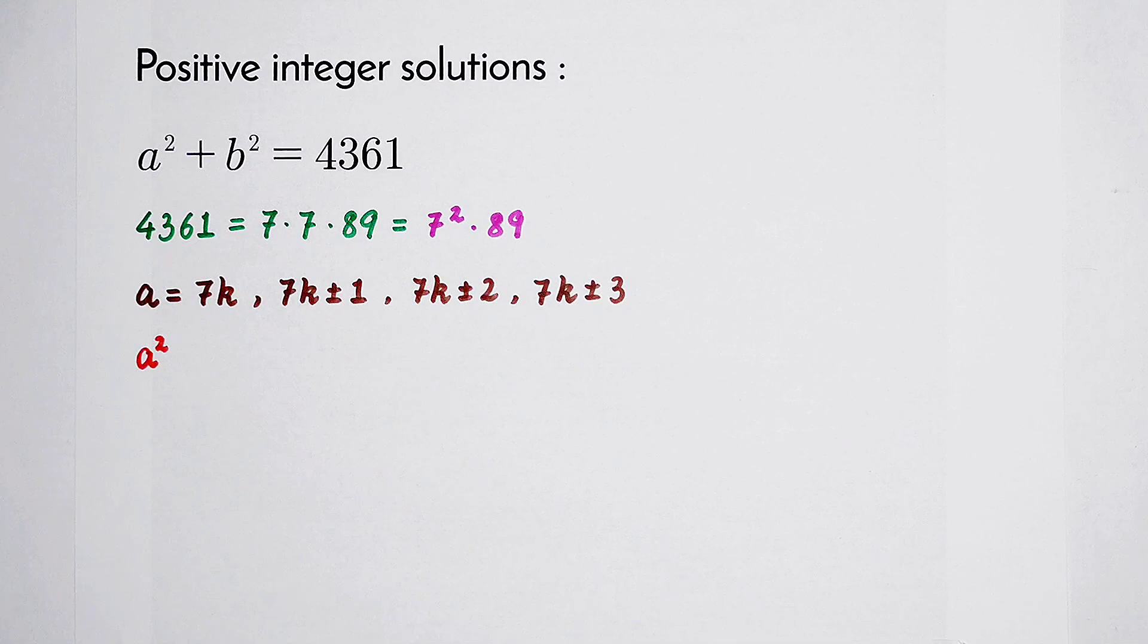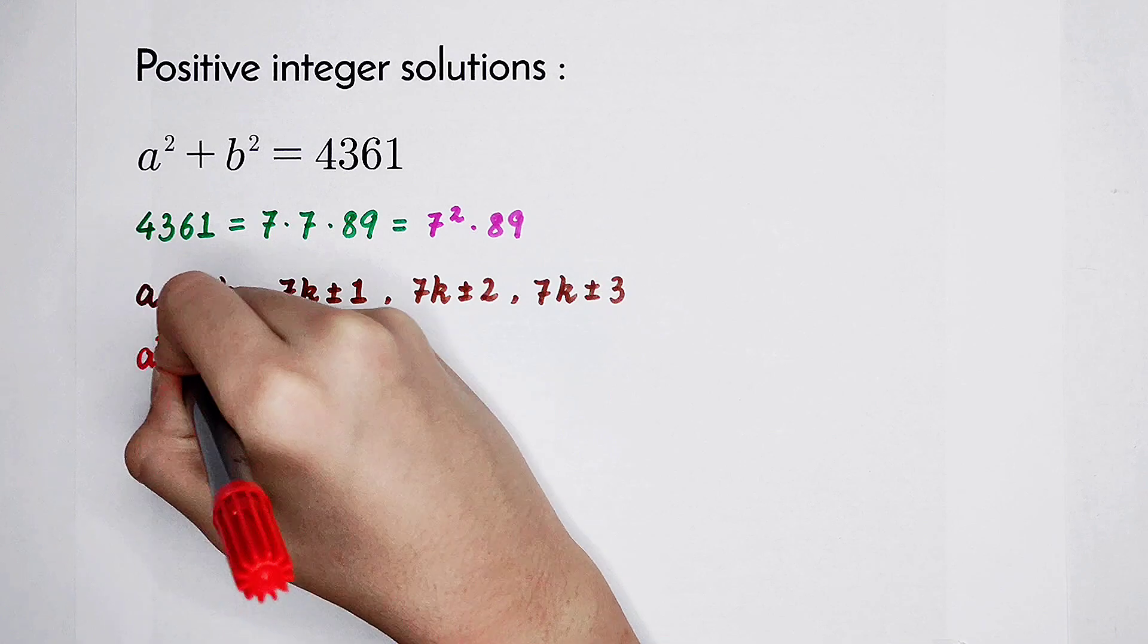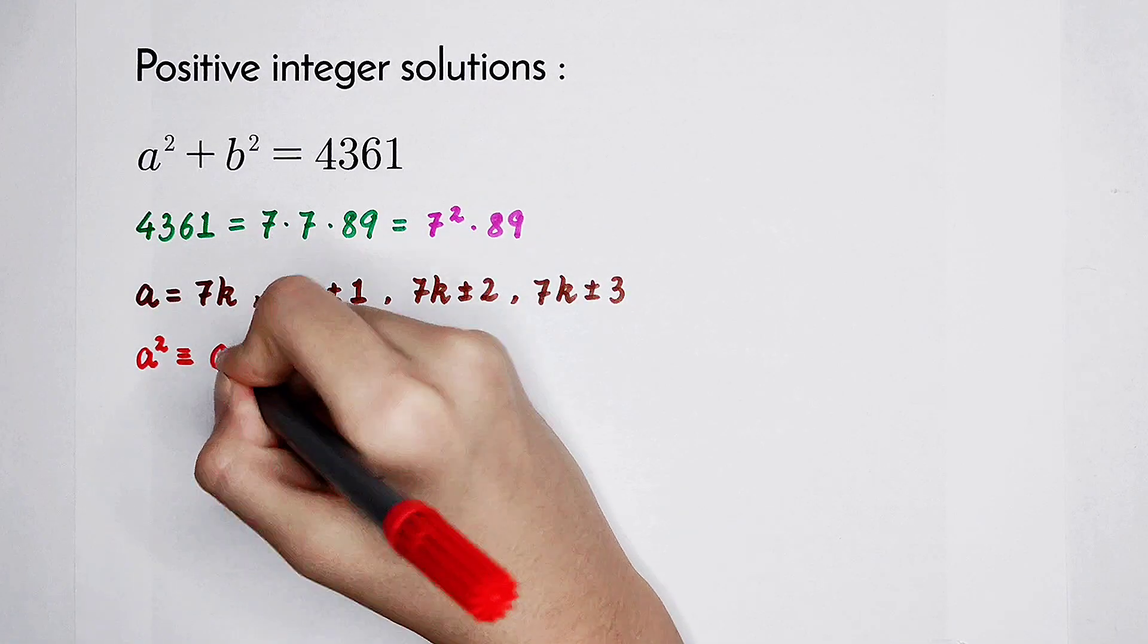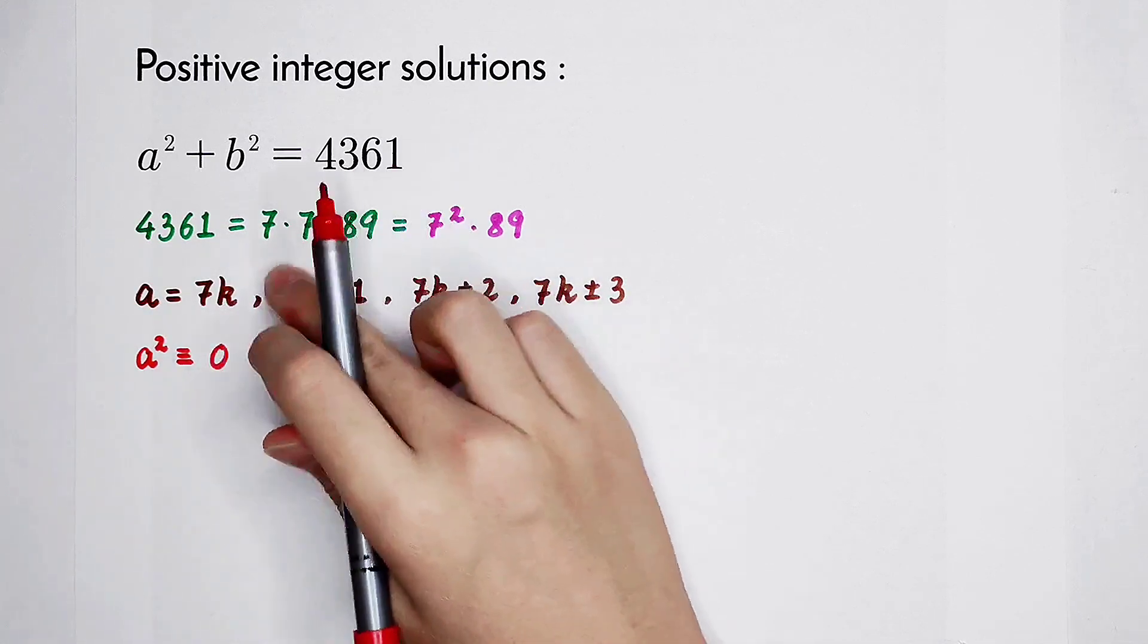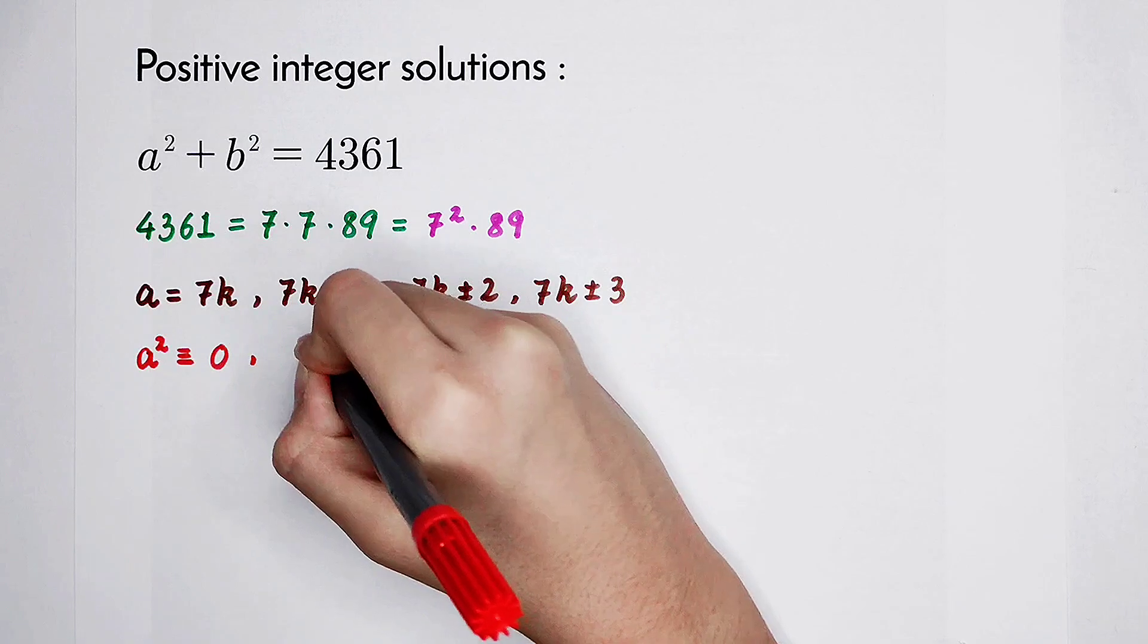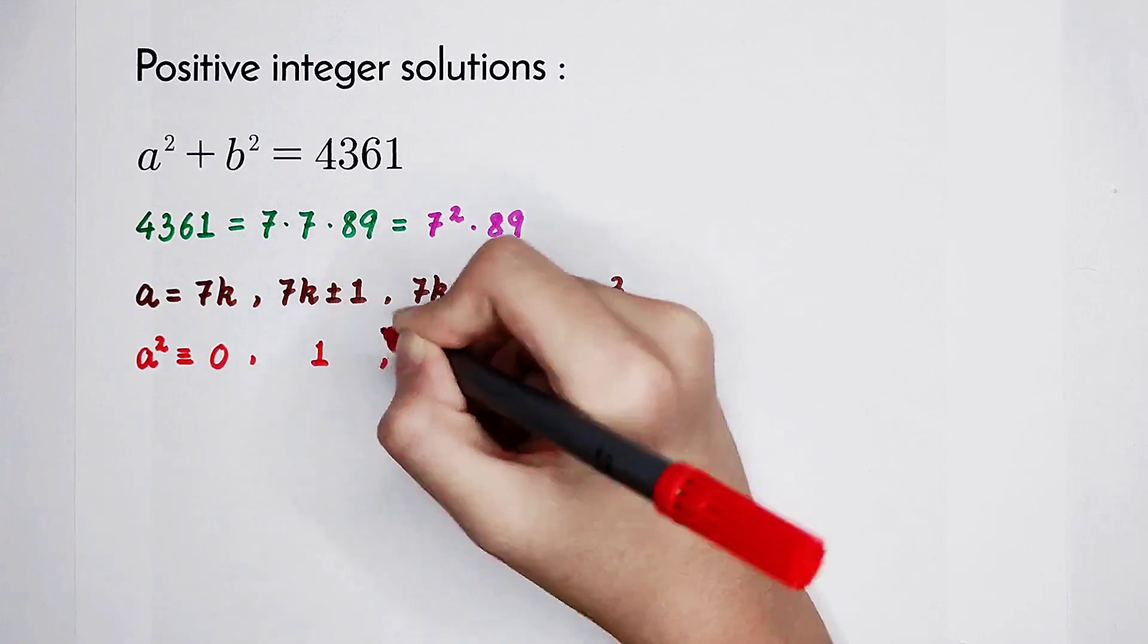Now analyze. If a is congruent to 0 mod 7, then a squared is also congruent to 0 mod 7. If a is congruent to 1 or 6 mod 7, then a squared is congruent to 1 mod 7.